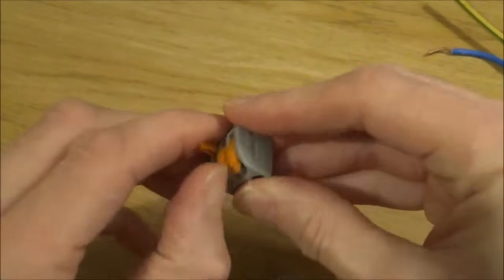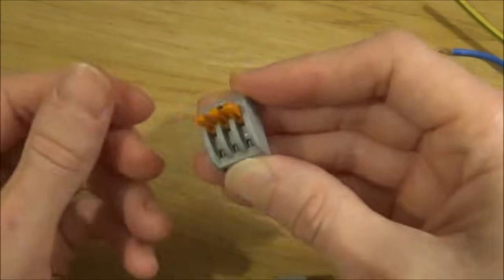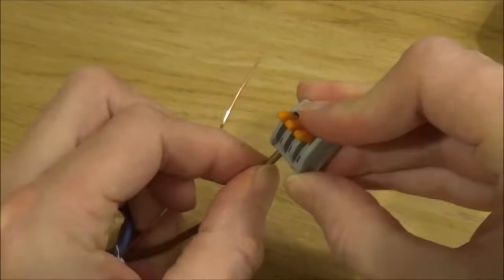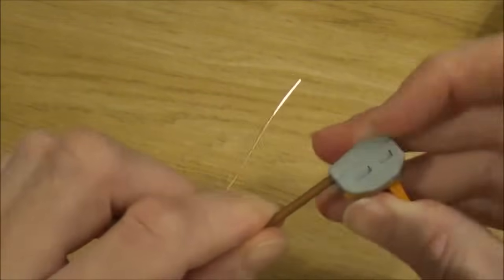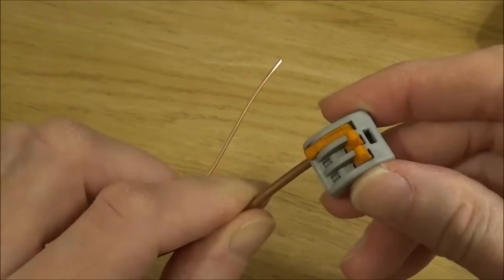Just release the levers by pulling them up. That then slots straight into the connector block. Flick the lever down and that is securely fastened inside the connector. It's that simple.